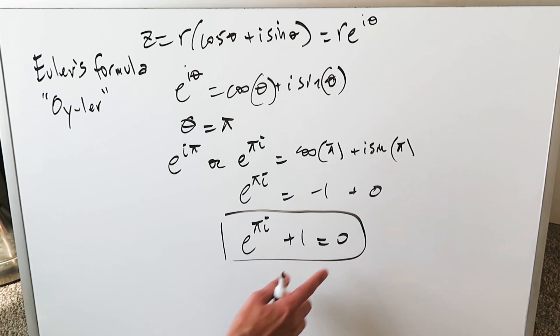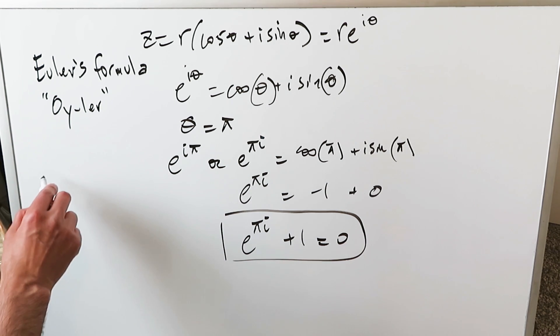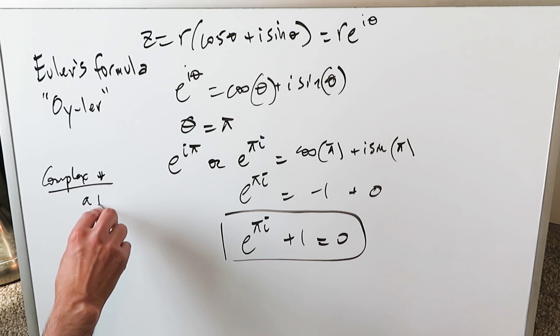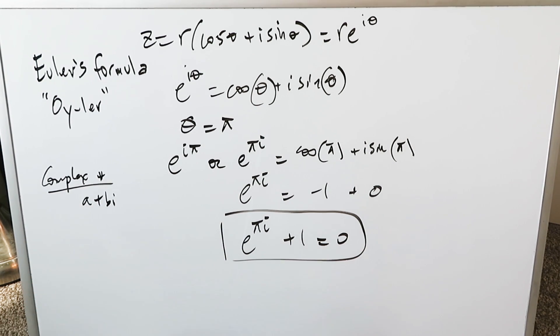It is a very famous equation because you're seeing the five important constants of mathematics: zero, one, E, pi, i. But more than that, you have so many different number types represented here. You have complex numbers represented here, and you can think about complex numbers as anything which looks like A plus B i.